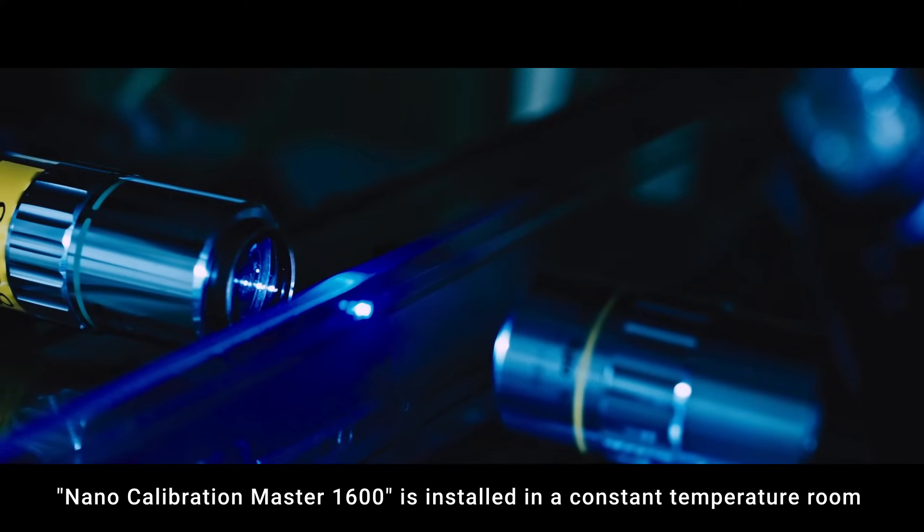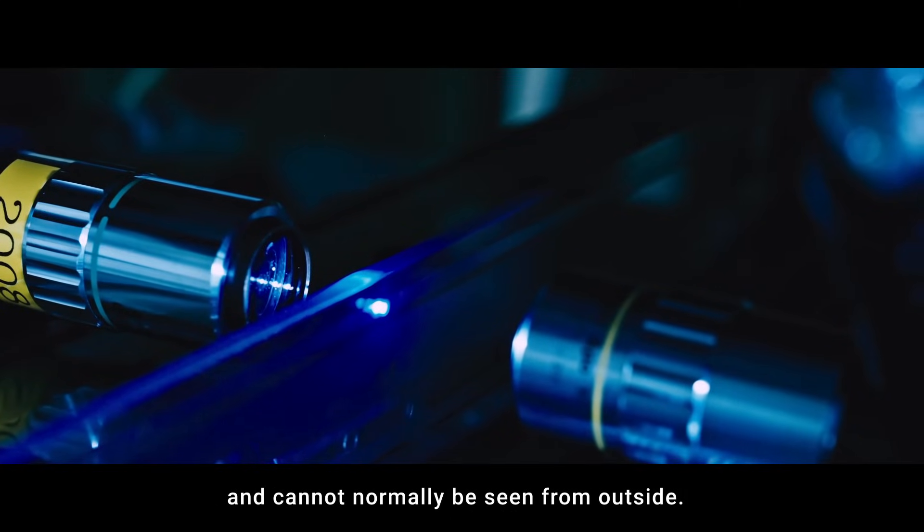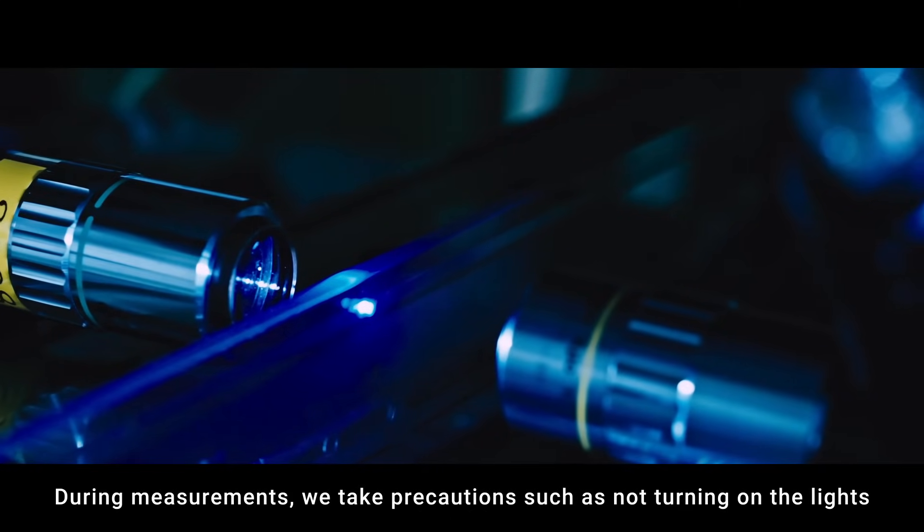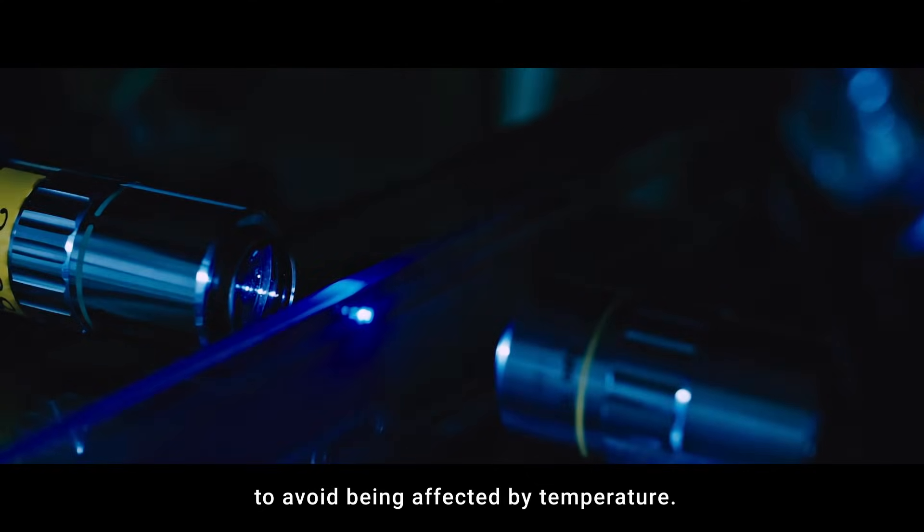Nano Calibration Master 1600 is installed in a constant temperature range and cannot normally be seen from outside. During measurements, we take precautions such as not turning on the lights to avoid being affected by temperature.